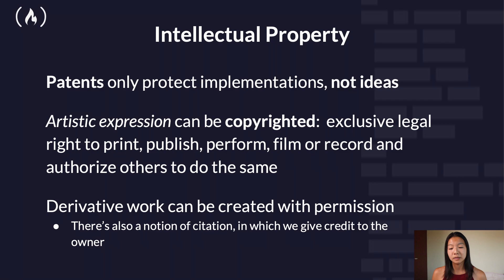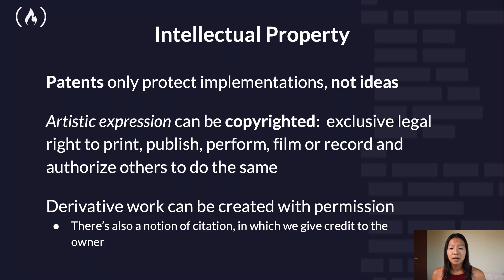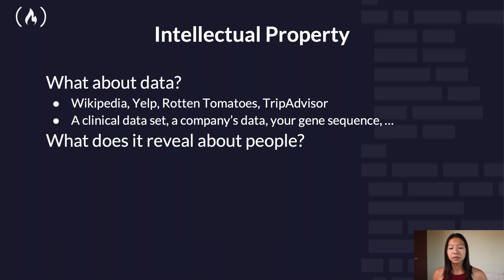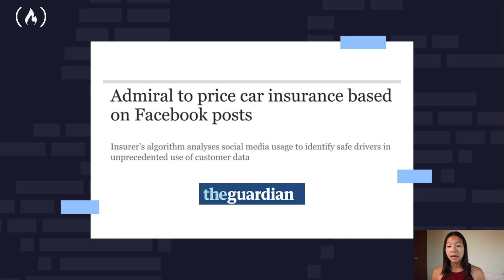Moving on to intellectual property. Big datasets are very vague about how they are protected. Patents only protect implementations, not ideas. Artistic expression can be copyrighted — the exclusive legal right to print, publish, perform, film or record, and authorize others to do the same. Derivative work can also be created with permission, and there's the notion of citation, which gives credit to the owner. But what about data? There's Wikipedia, Yelp, Rotten Tomatoes, TripAdvisor, clinical data sets, a company's data, your gene sequence — and what does it reveal about people? There are lots of cases where your data influences what service you get. Your insurance company may put a GPS tracker on your car and give you different rates depending on whether you're speeding or other driving habits.